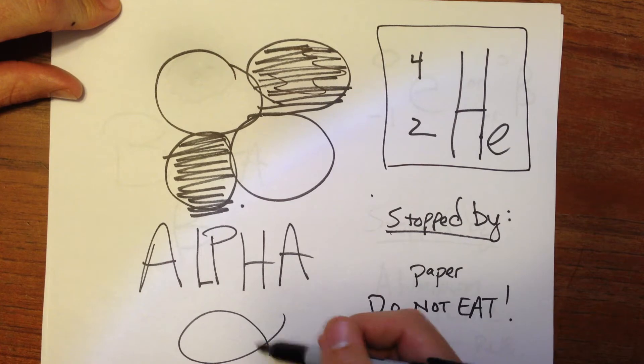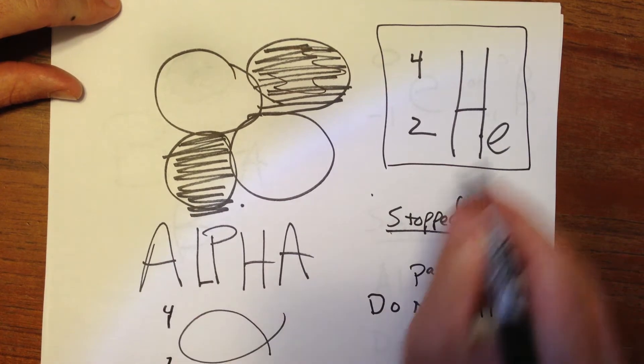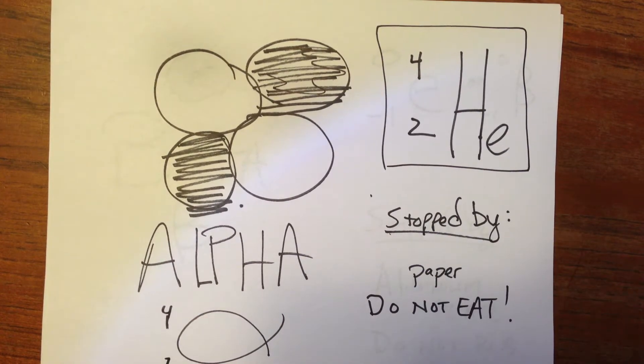Sometimes you'll see it drawn just as the alpha symbol with maybe a four-two, but usually you'll have the helium atomic symbol there.